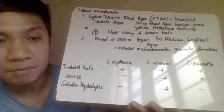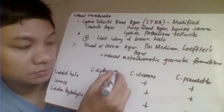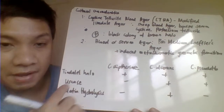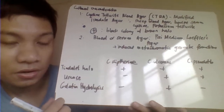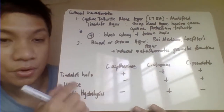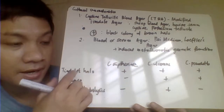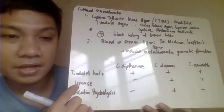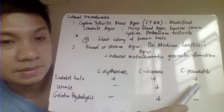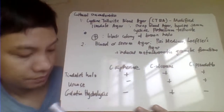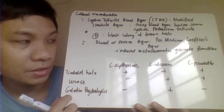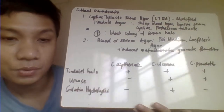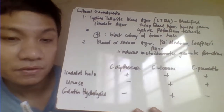We have different species of Corynebacterium — aside from diphtheriae, we also have ulcerans and pseudotuberculosis. They are identified by biochemical reactions and cultural characteristics. All of them grow on cysteine tellurite blood agar giving black colonies with brown halo. For urease test, only ulcerans and pseudotuberculosis are positive — not diphtheriae. Gelatin hydrolysis test is positive only for ulcerans, not diphtheriae or pseudotuberculosis.